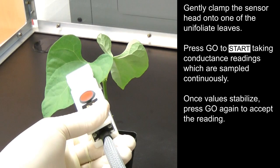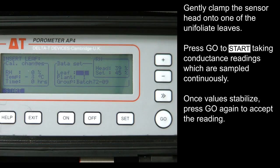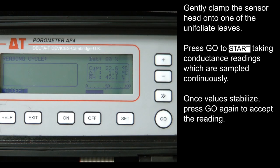Gently clamp the sensor head onto one of the unifoliate leaves. Press Go to start taking conductance readings which are sampled continuously.